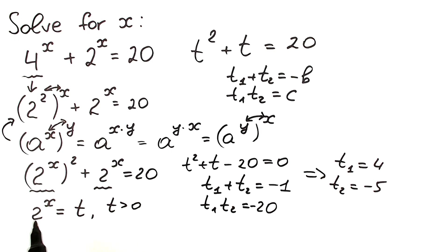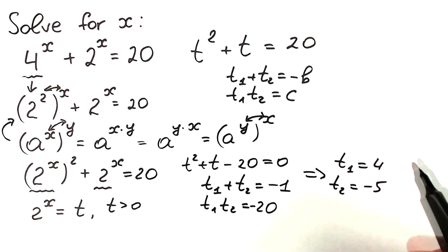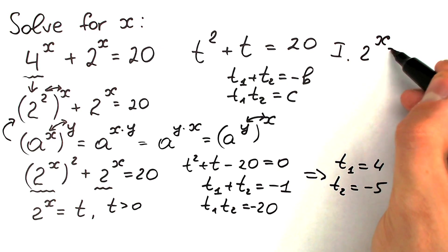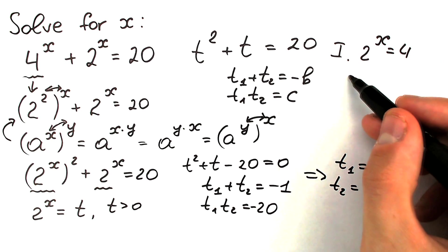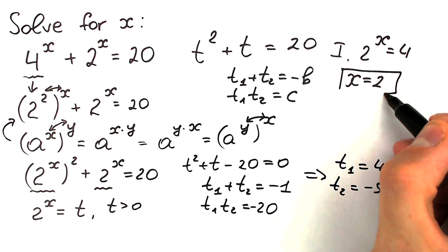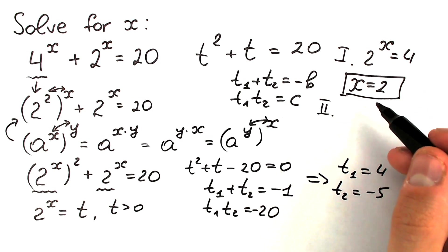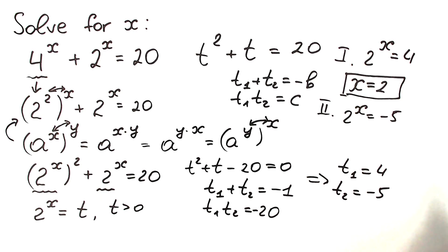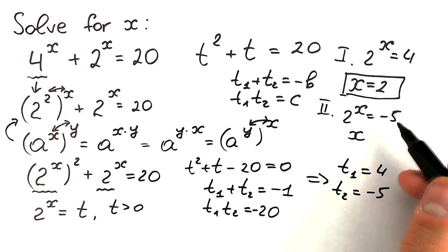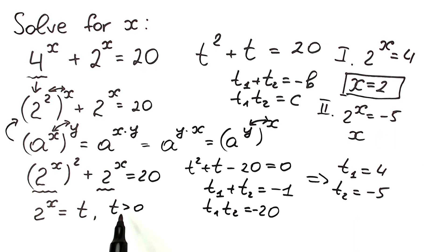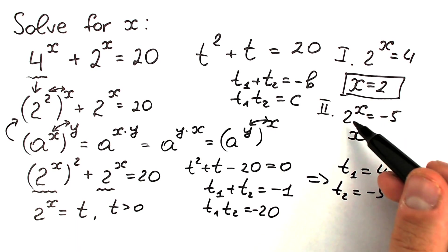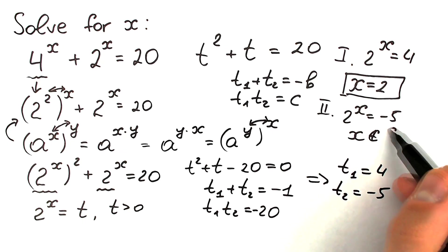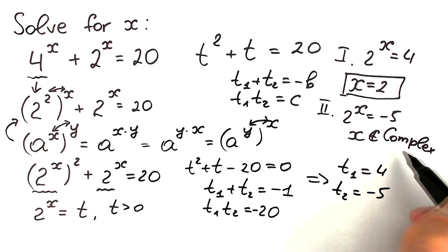Now let's go back to our substitution: 2 to the power x equals t. First solution: 2 to the power x equals 4, so x equals 2. Second solution: 2 to the power x equals minus 5. Since 2 to the power x cannot be negative, x has no real solution here — we get complex roots.